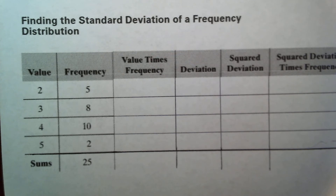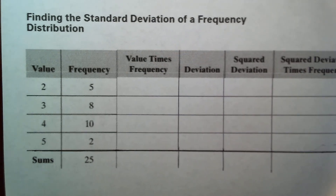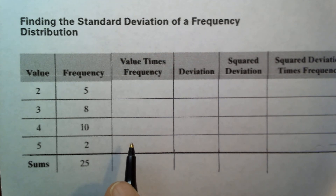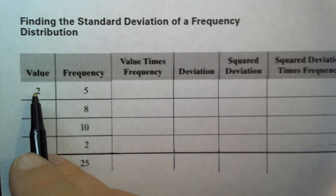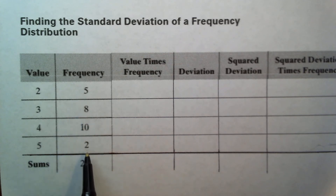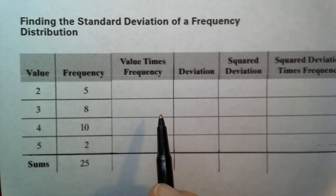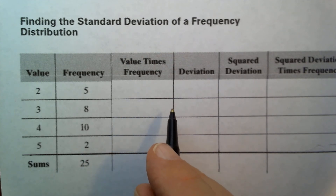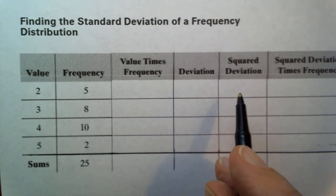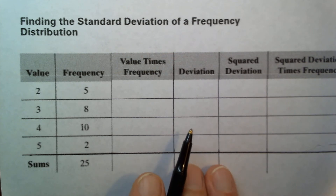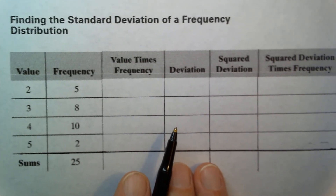When we find the standard deviation of a frequency distribution, it is a little more complicated. We have our values and their corresponding frequencies. The columns we need are: value, frequency, value times frequency, deviation of the value from the mean (x minus x-bar), the squared deviation, and then the squared deviation times frequency.